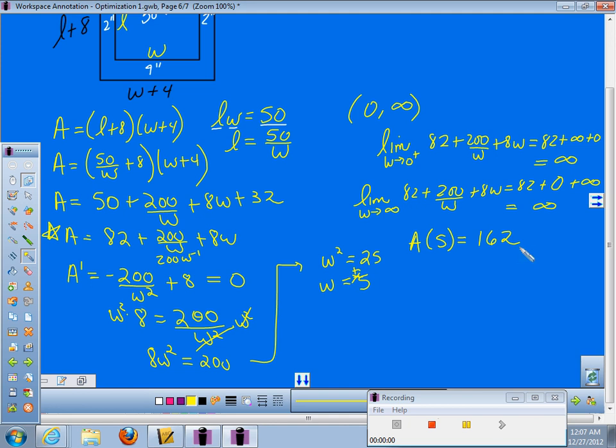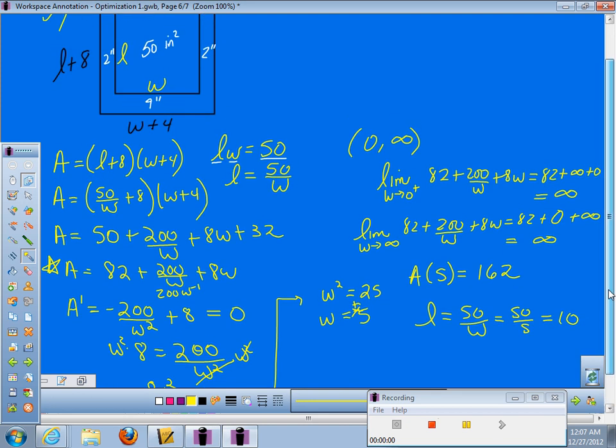Our question was what dimensions will he need? So we need to go find the length. We know up here length was 50 over W. So if I do 50 divided by 5, the length must be 10. Now be very, very careful here when writing your final answer. You will notice that L and W were the inside. We need the dimensions of the outside area.